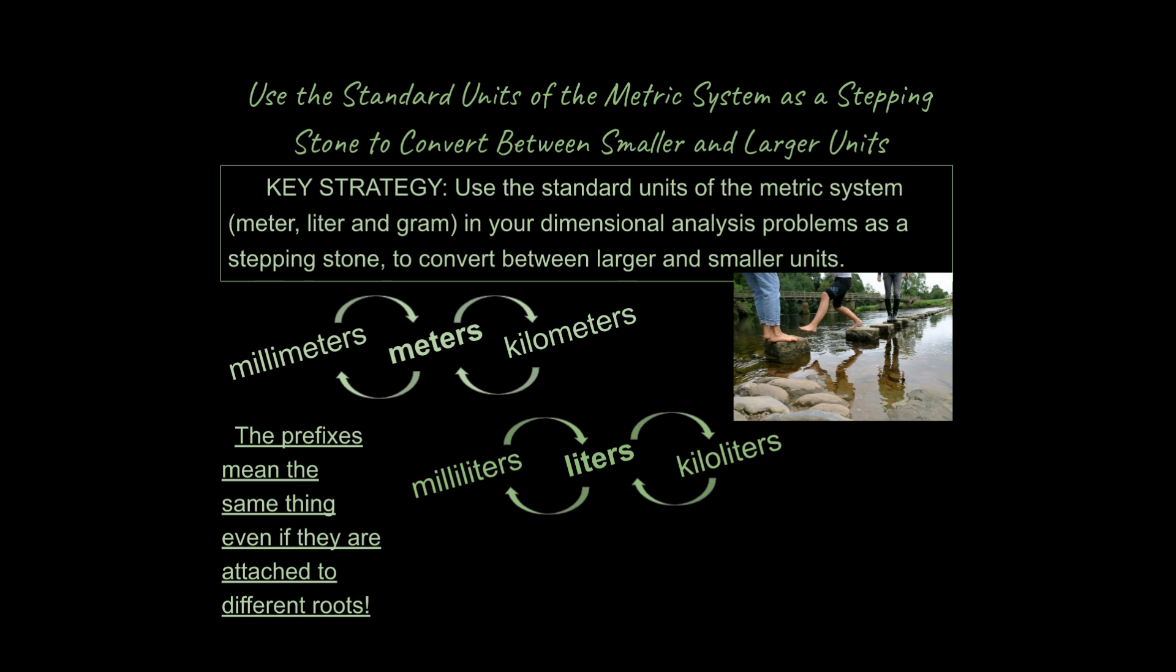If you know the prefix meaning, you can apply it to different standard or base units, and it means literally the same thing. Milli, as an example, means 1/1000, or you could say there are 1,000 milliliters in 1 liter, for an example. So if there are 1,000 milliliters in 1 liter, then you could also say there are 1,000 milligrams in 1 gram. So that's one reason why the metric system is so useful. You use these base units and you use prefixes, attach the prefixes onto the base units, and the prefixes all mean the same thing, even with different bases.